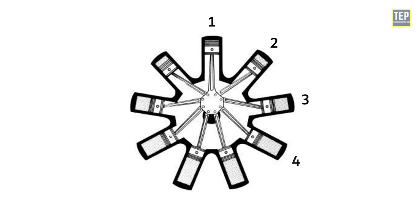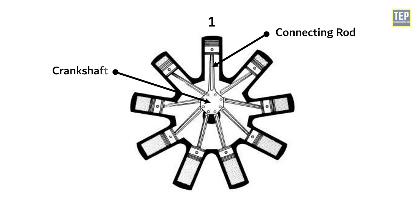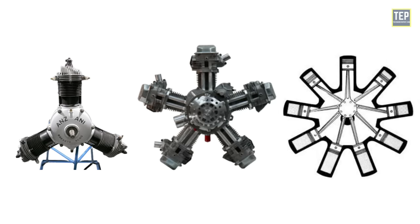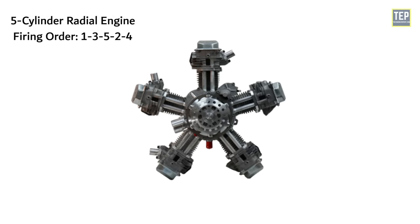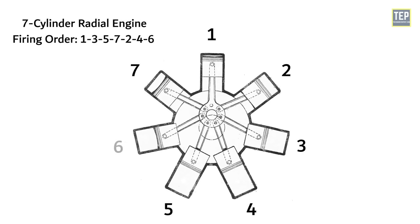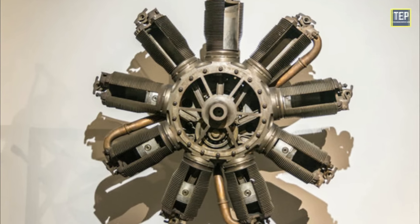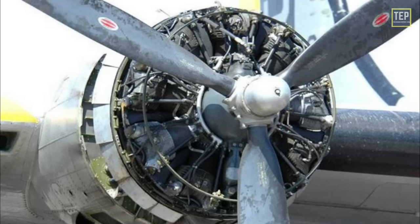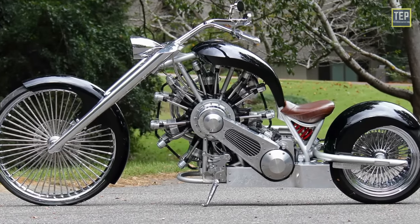In a radial engine, cylinders are numbered from the top going clockwise, with the first cylinder numbered one. The first cylinder's connecting rod is attached directly to the crankshaft — this is called the master rod — while the other cylinders' rods connect to pivoting points around the master rod. Every radial engine has an odd number of cylinders and they fire in an alternating order: a five-cylinder fires in a 1-3-5-2-4 order, and a seven-cylinder fires in a 1-3-5-7-2-4-6 order. While primarily used in aviation, radial engines have also been fitted to tanks, cars, and bikes throughout history.